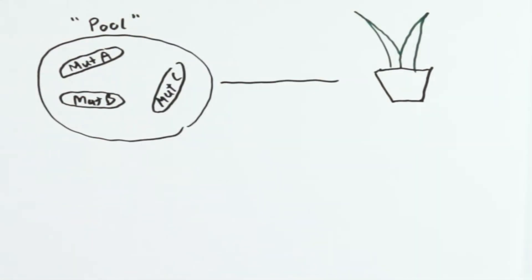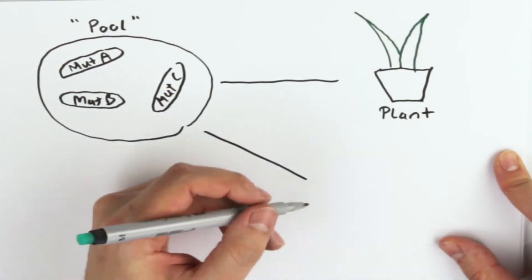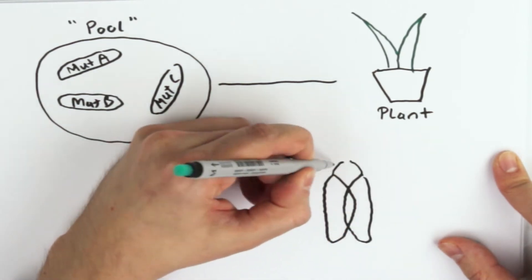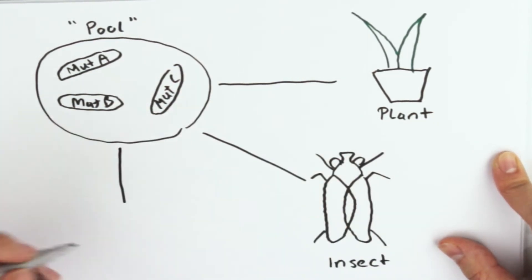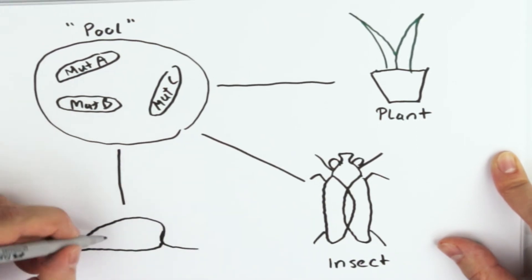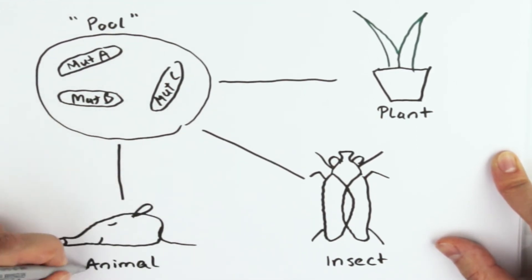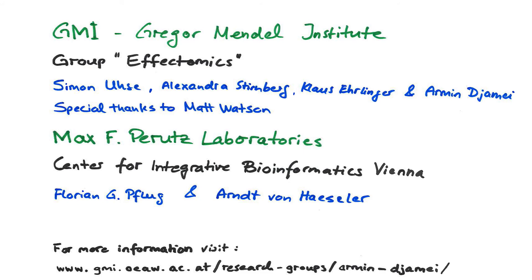iPoolSeq can be used for any insertion mutant pool and due to its strong selectivity, I suggest that it is especially helpful for microbes during the interaction with a host. No matter if the host is a plant, an insect, or an animal.